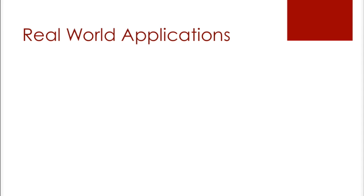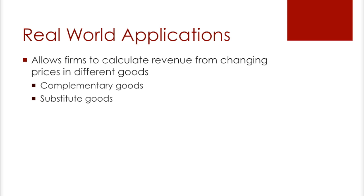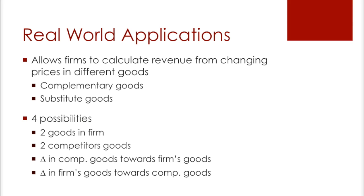Now we can see some real-world applications to cross elasticity. This allows firms to calculate revenue from changing prices in different goods, so they can determine whether the goods they produce or the goods they're competing with are complementary goods or substitute goods. There are four possibilities: either one firm produces two goods and wants to see whether these goods are complements or substitutes and thus alter the price accordingly, or a firm can analyze their competitors' goods and see how strongly they are related to their own goods.